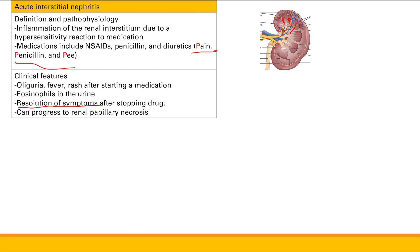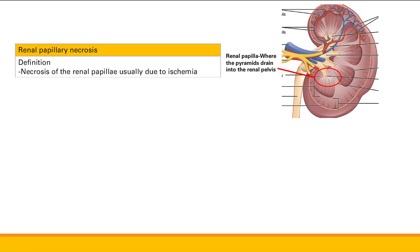Acute interstitial nephritis can progress to renal papillary necrosis — necrosis of the renal papillae, usually due to ischemia. The renal papillae is where the pyramids drain into the renal pelvis.